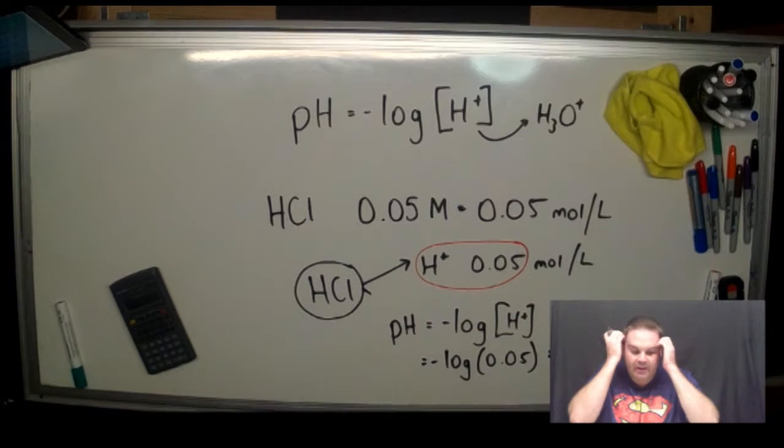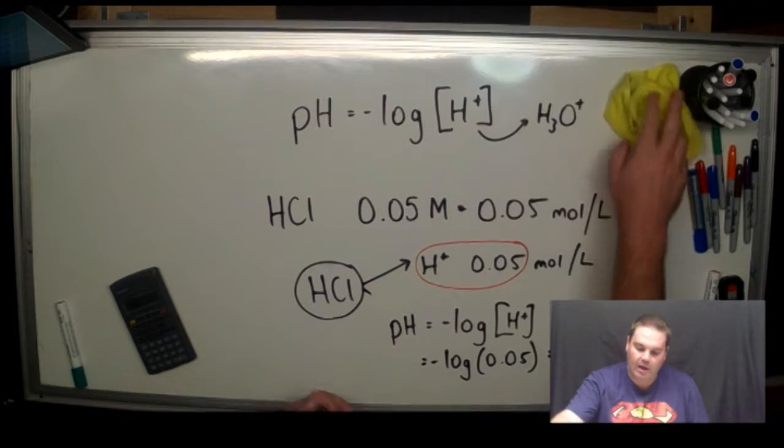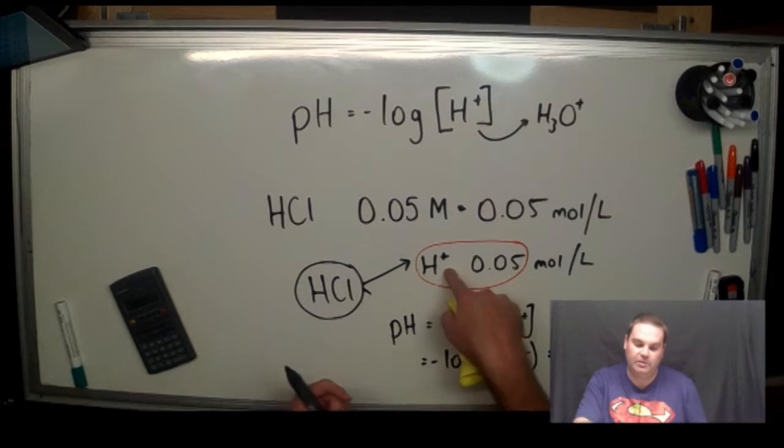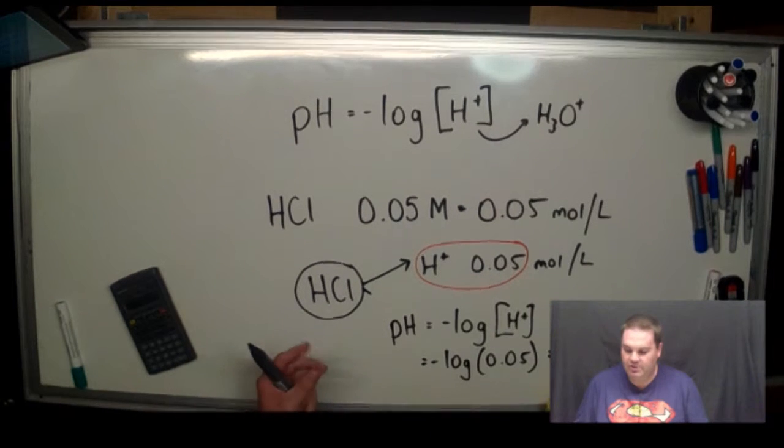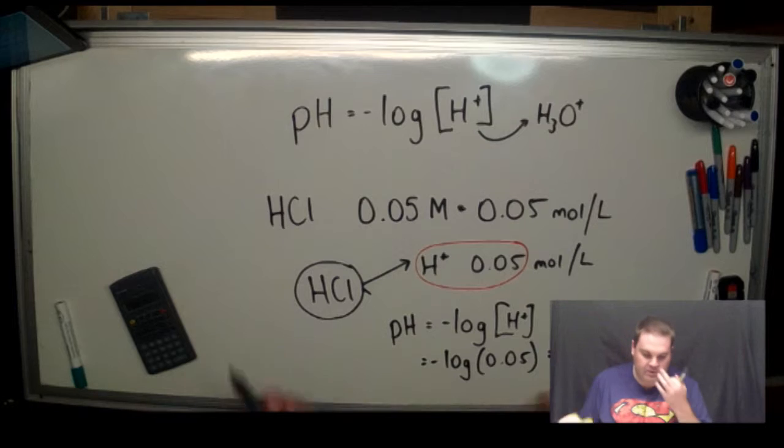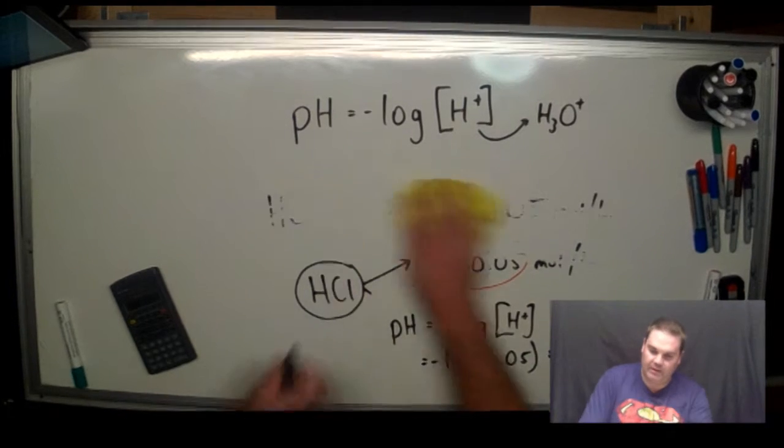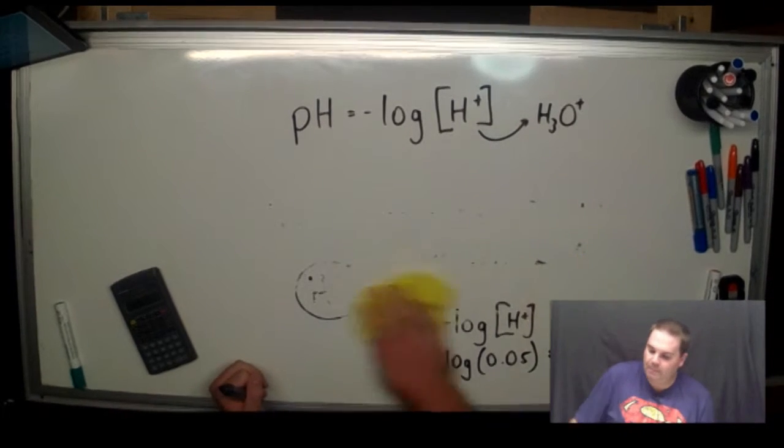So that's how we calculate H+. And the higher the concentration of hydrogen ions you have, the lower your pH is going to be. Let me show you another example.